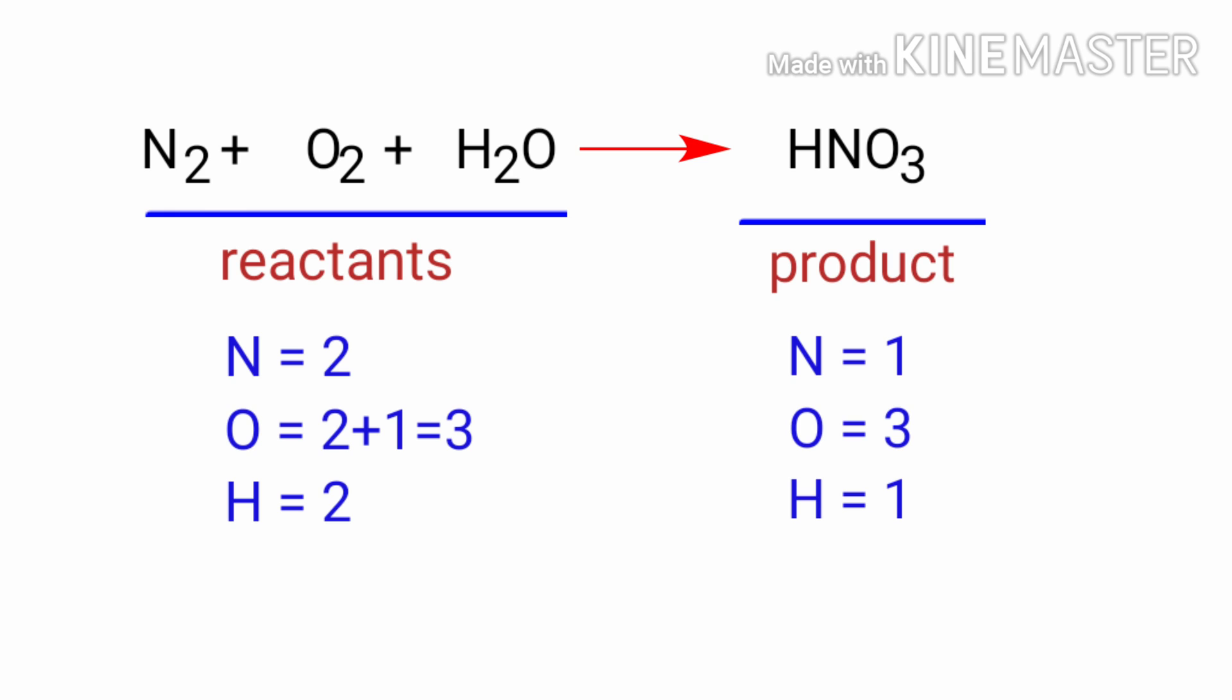If you look at this equation, the equation is not balanced. In the reactants side, there are two nitrogen atoms, three oxygen atoms, and two hydrogen atoms present. On the product side, there are one nitrogen atom, three oxygen atoms, and one hydrogen atom present.